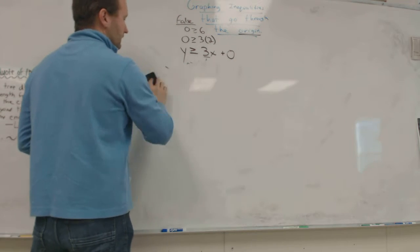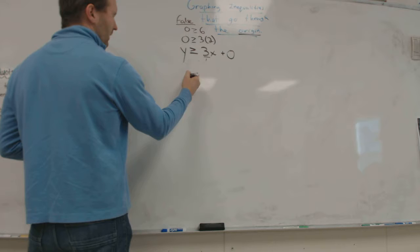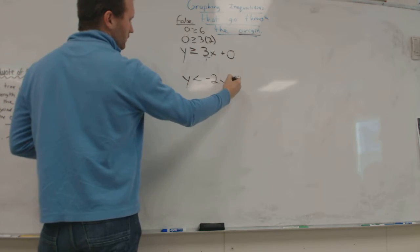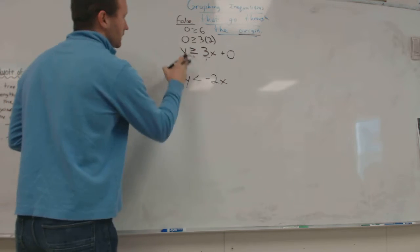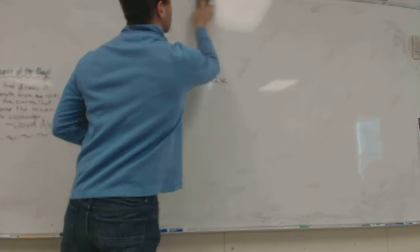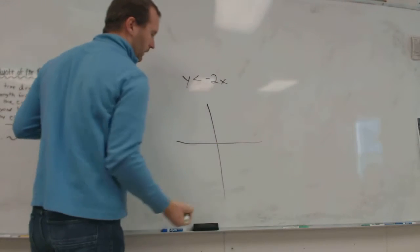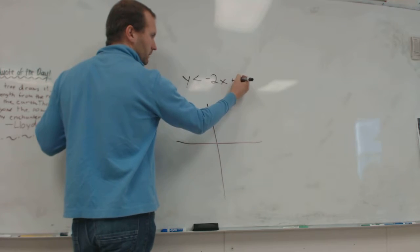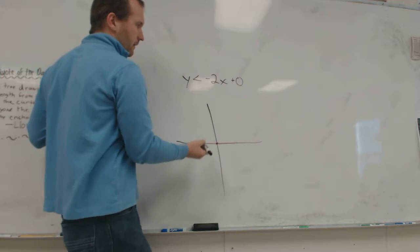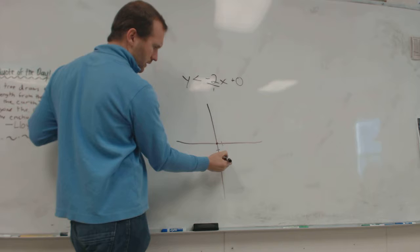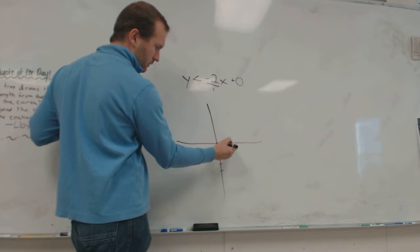Let's do one more example like that. So what if I had y is less than negative 2x? y is less than negative 2x. Okay. So I imagine a plus 0 here. Start there. Then my slope is negative 2 over 1. So I go down 2 over 1. Down 2 over 1.